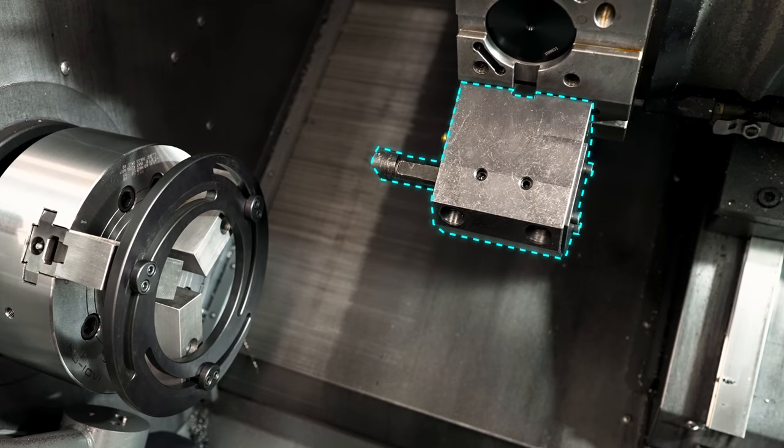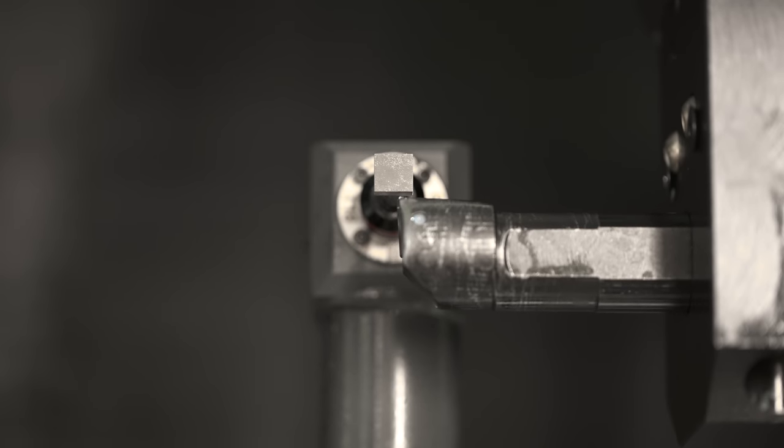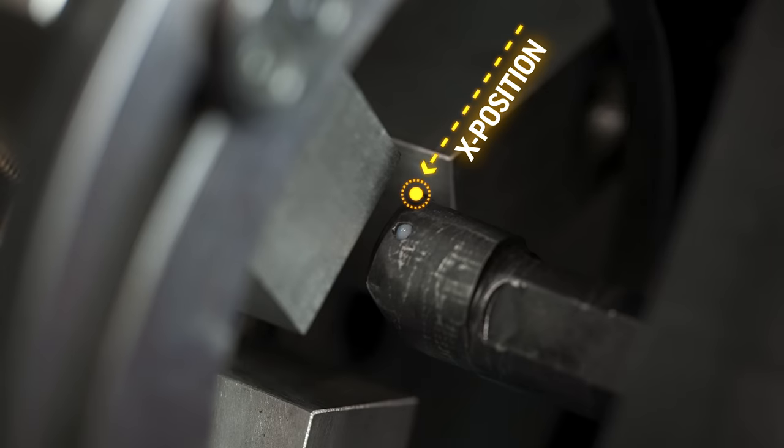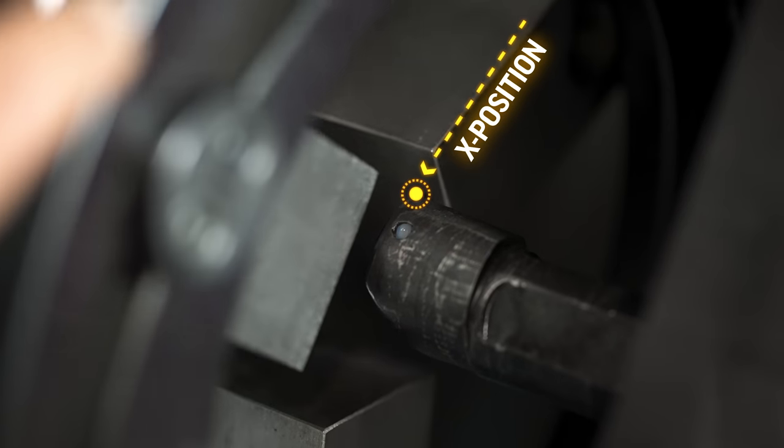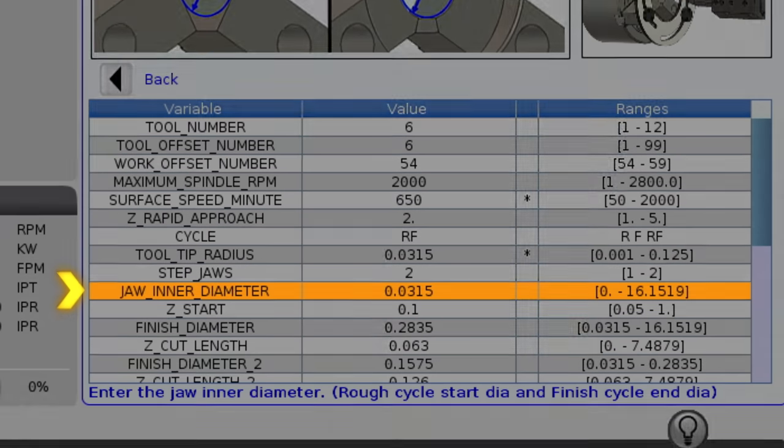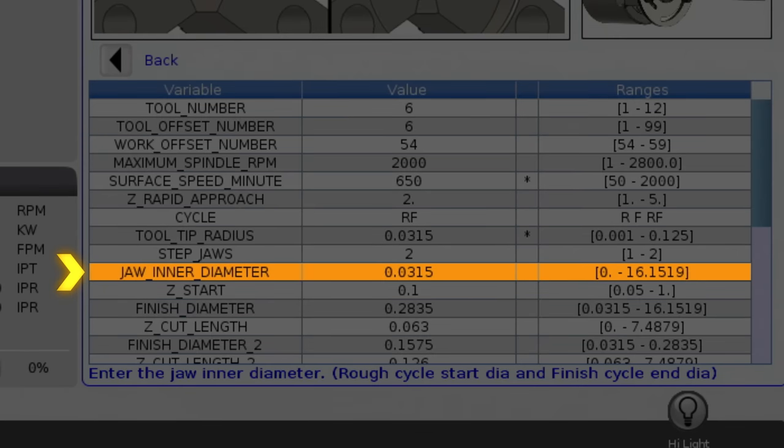The tool we are using is in position and the tool offsets have already been set off the ATP arm. Also, the Z-work offset has already been set to the face of the jaws. I have also made a note of the X position here, which is slightly below the cut diameter. We will need this value later for the template jaw inner diameter position.